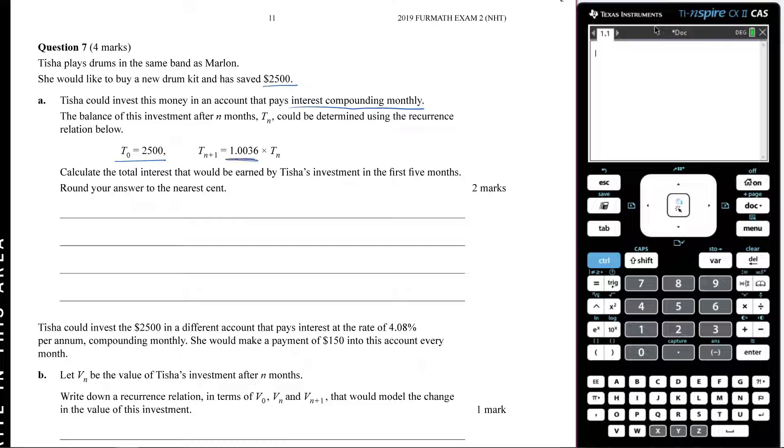So it's showing you the initial, and then this here is telling you how much interest that you're earning each month. It says we need to calculate the total interest that would be earned by Tisha's investment in the first five months. Round your answer to the nearest cent.